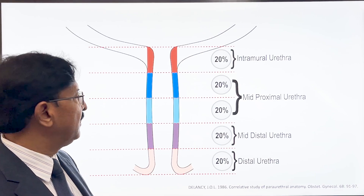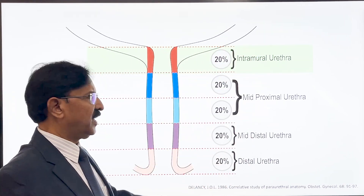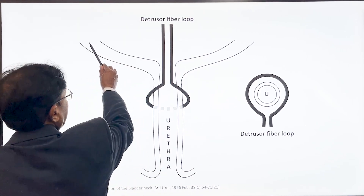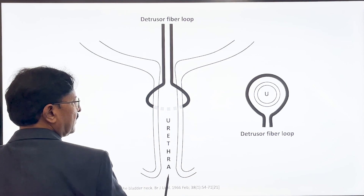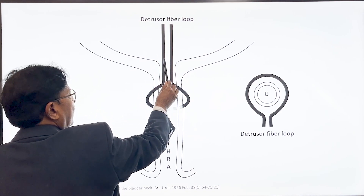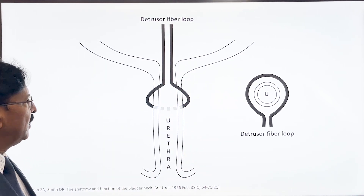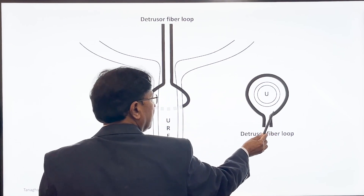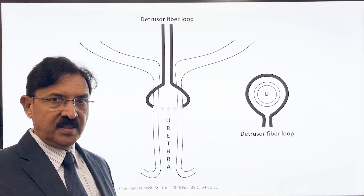You will recall this diagram from my first presentation. In this video I am talking only about this part — the intramural urethra. The first concept to understand is that the detrusor muscle fibers come down from the bladder, course behind the bladder neck, go around the urethra, and ascend back on the bladder, traversing around the intramural urethra for about three-fourths of its circumference. This is crucial to understand.